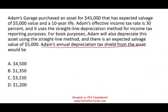The question asks: what would Adam's annual depreciation tax shield from the asset be? Adam's Garage purchased an asset for $45,000 with an expected salvage value of $5,000 and a 10-year life. Adam's effective income tax rate is 30% and it uses the straight-line depreciation method for income tax reporting. For book purposes, Adam also depreciates this asset using straight-line with an expected salvage value of $5,000.